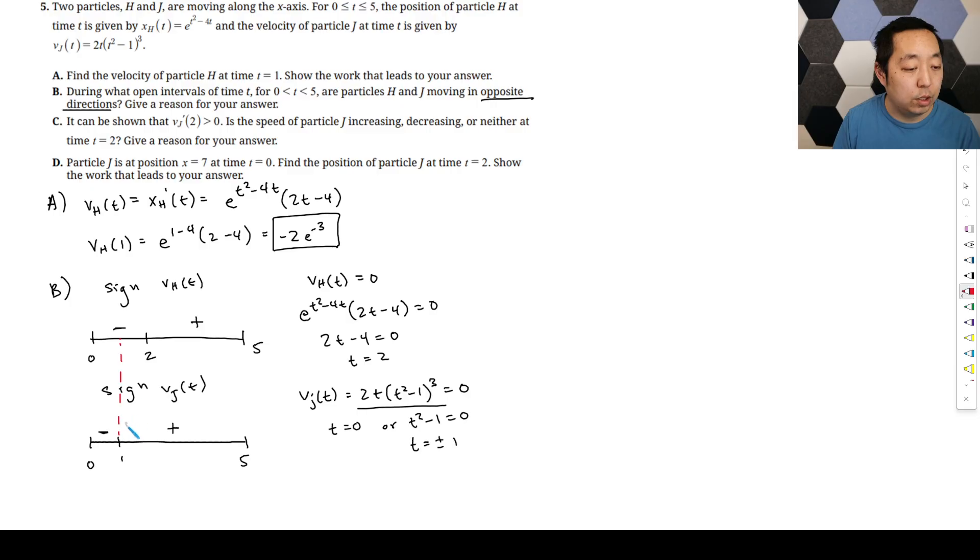So when are they moving in opposite directions? There's this little overlap between 1 and 2 here, where vh is moving in the negative direction, vj is moving in the positive direction. So that's going to be 1 less than t less than 2.